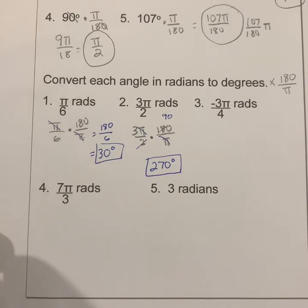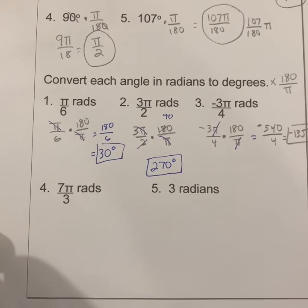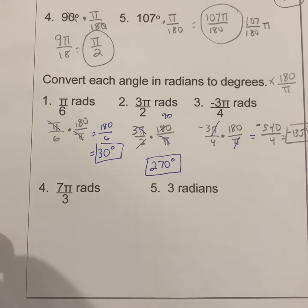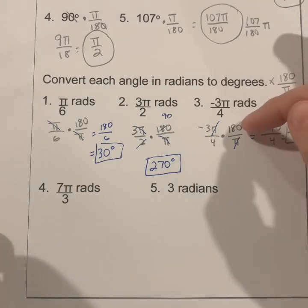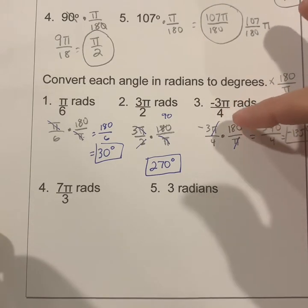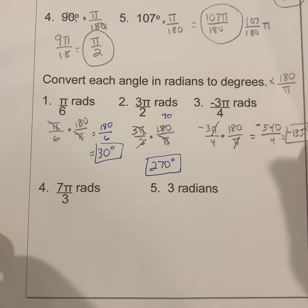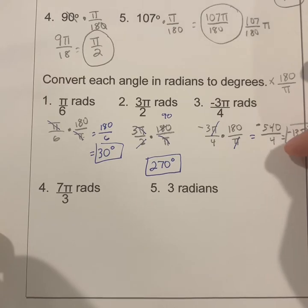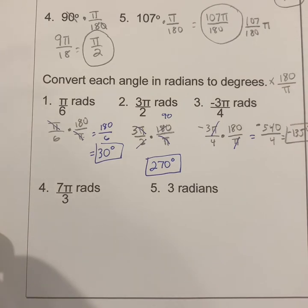For problem number three — negative 3π over 4 times 180 over π — the π's cancel. 4 goes into 180 forty-five times, so multiply negative 3 times 45 to get negative 135. Alternatively, multiply negative 3 times 180 to get negative 540, then divide by 4. Negative 540 divided by 4 equals negative 135 degrees.